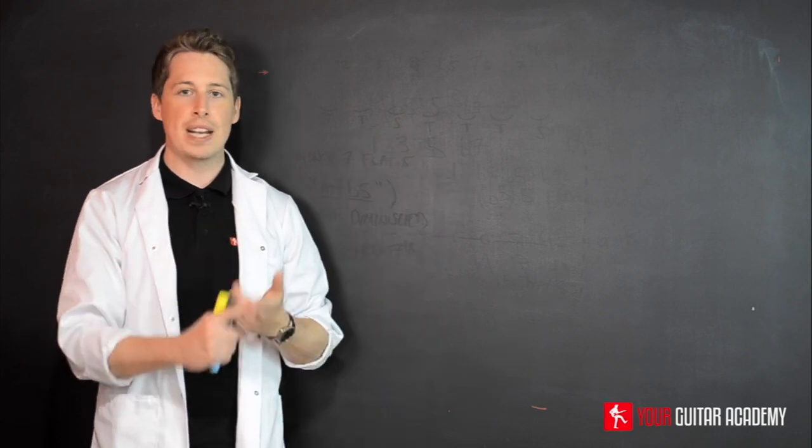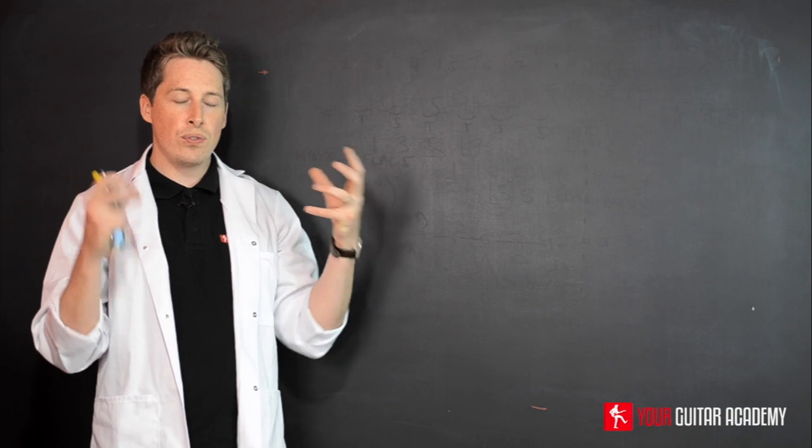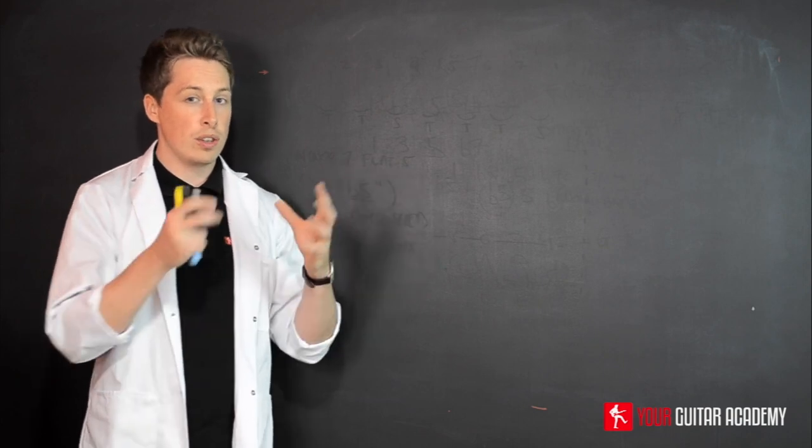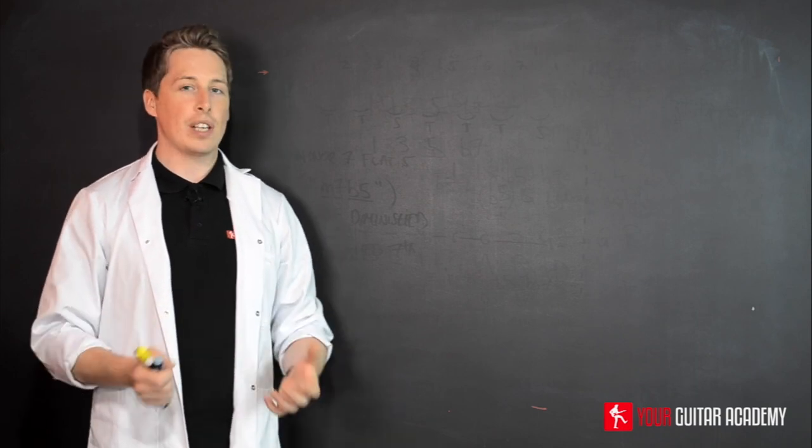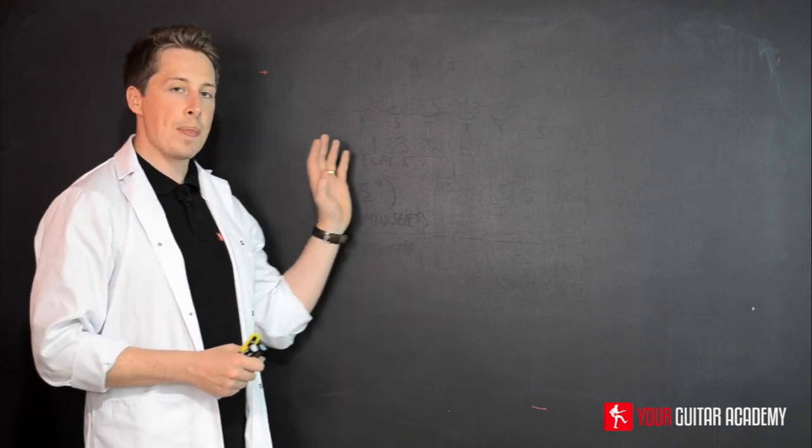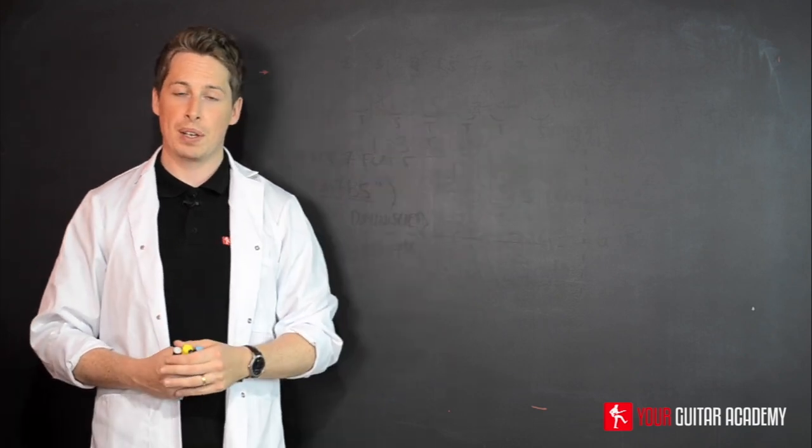In the previous course we also looked at major seven, minor seven, and dominant seventh chords. With those four different types of chords—the three main ones and then the minor seven flat five being the diminished—we're going to use that knowledge to create the harmonized scale, the harmonized key using seventh chords.